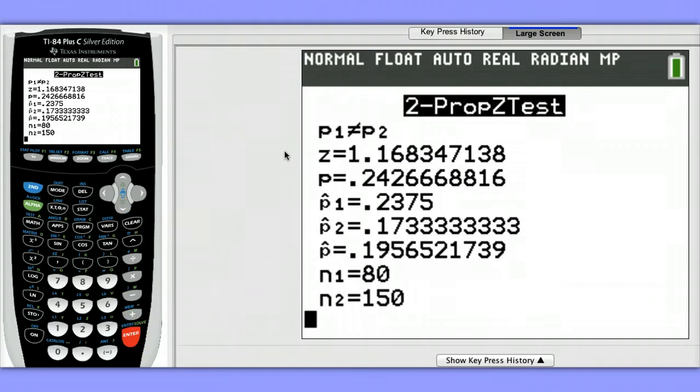Our test statistic value is z equals 1.17. Our p-value is 0.24. And notice we see our two sample proportions and a combined sample proportion.